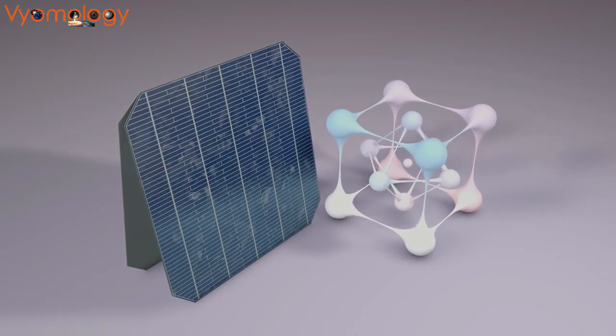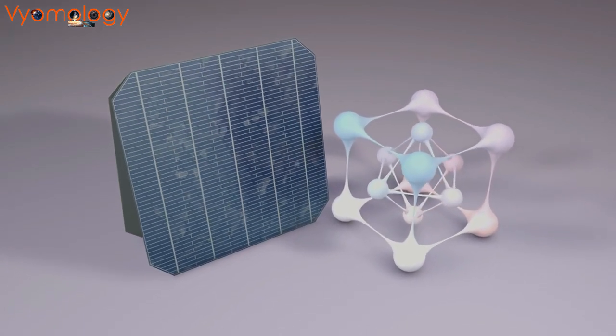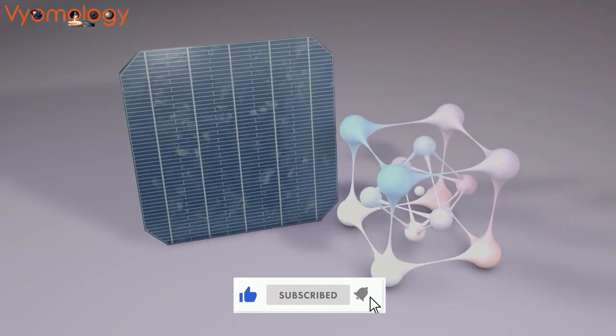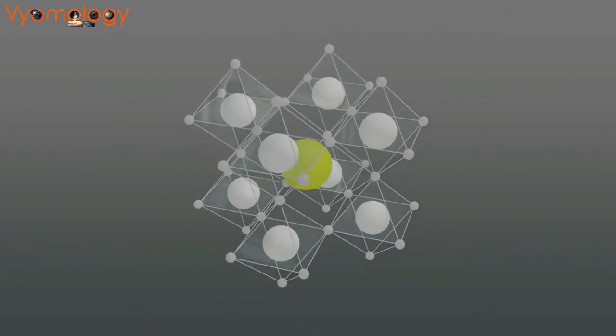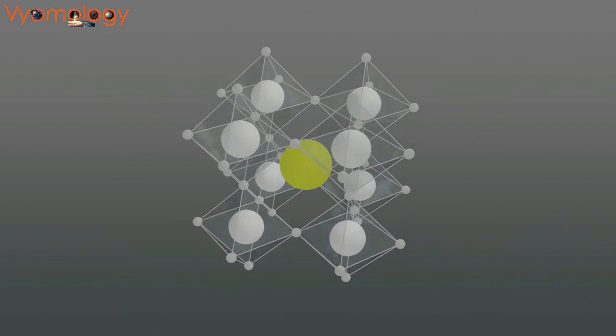Enter perovskite solar cells, a revolutionary leap in photovoltaic technology. Derived from the three-dimensional perovskite structure, these cells offer a promising solution for harnessing solar energy.